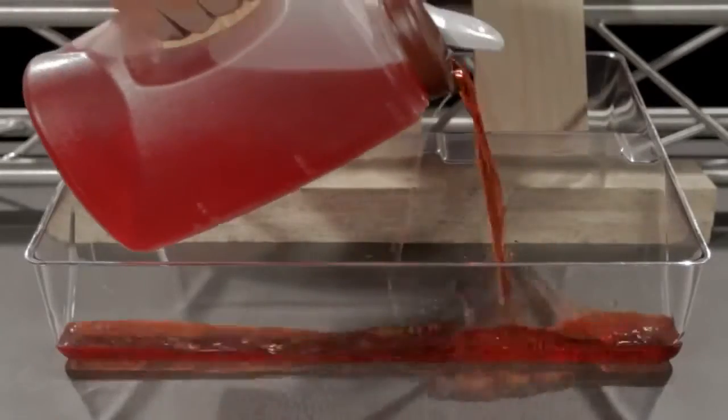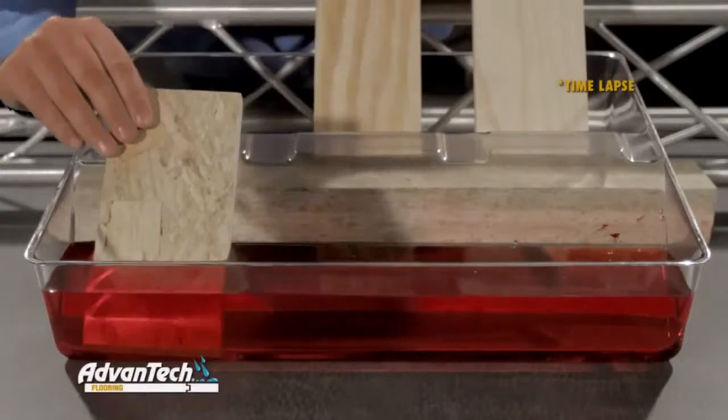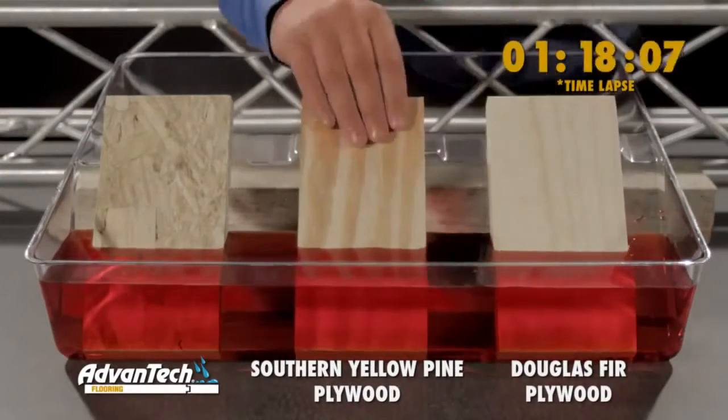Here are center cuts from a piece of Douglas fir plywood, southern yellow pine plywood, and Advantek subflooring.